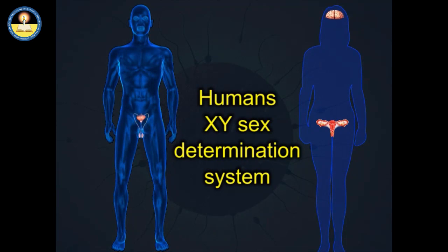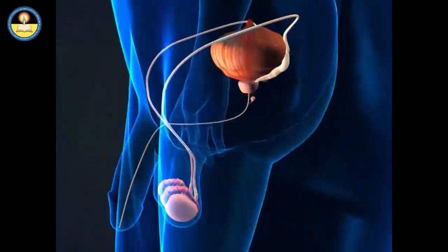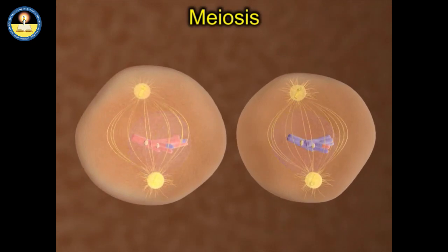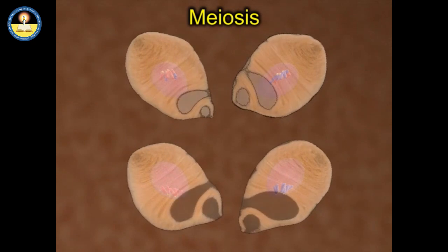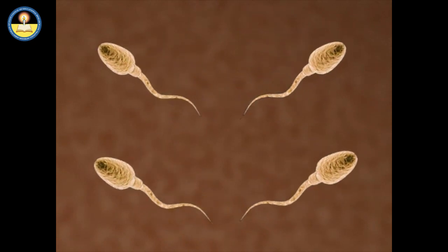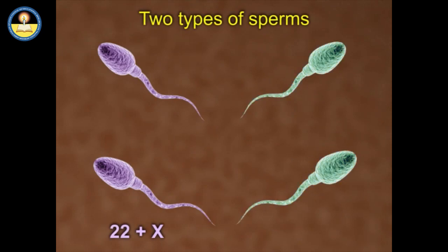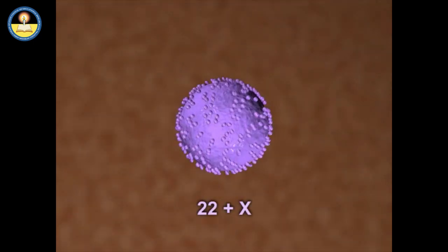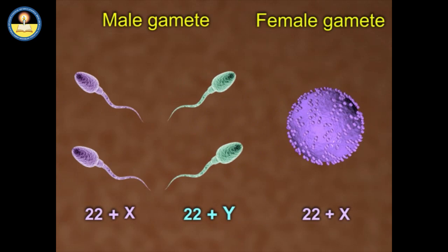Humans have the X-Y sex determination system. When meiosis takes place for the formation of gametes in a male, two types of male gametes — sperms — are produced: one with an X chromosome and the other with a Y chromosome. That means half the sperms will have 22 plus X chromosome and the other half will have 22 plus Y chromosomes. But in females, only one type of gamete is produced. All ova will have 22 plus X chromosome. The egg is always of one type — all having the X chromosome — whereas sperms are of two kinds.